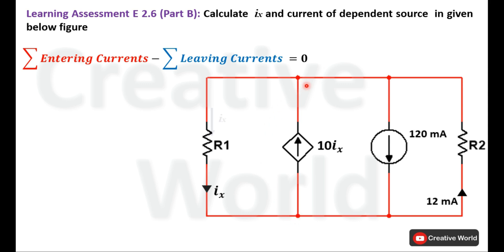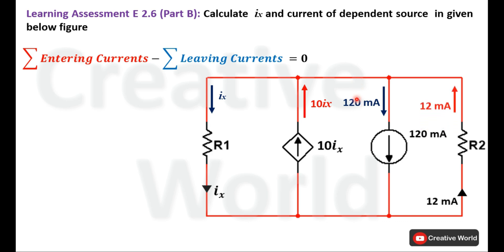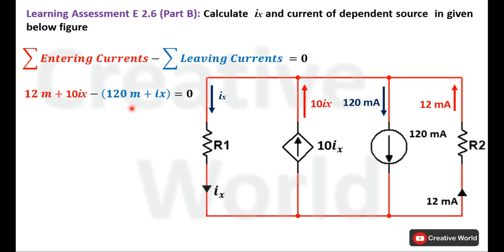At this node, the first current is Ix, which is leaving. The second current is 10Ix, which is entering. The third current is 120 mA, which is also leaving. The fourth current is 12 mA, which is entering. Now that all entering and leaving currents are identified, we place these values into the equation — the two entering currents and the two leaving currents.